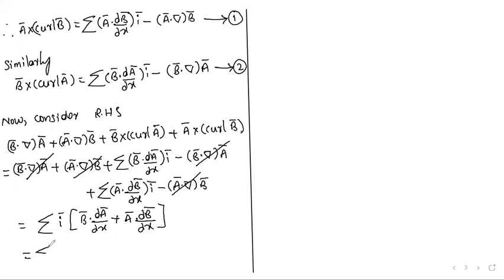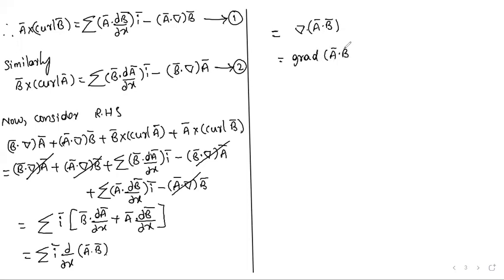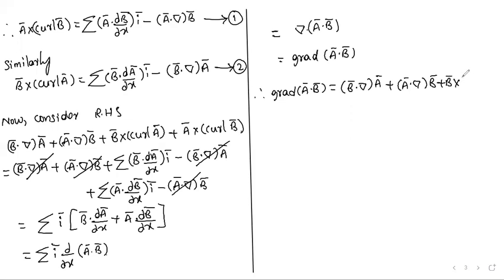Using the UV formula, the terms combine: summation i-bar·∂/∂x(Ā·B̄) equals ∇(Ā·B̄), which is grad(Ā·B̄). Therefore grad(Ā·B̄) equals B̄·∇Ā plus Ā·∇B̄ plus B̄ cross curl(Ā) plus Ā cross curl(B̄). Hence proved.